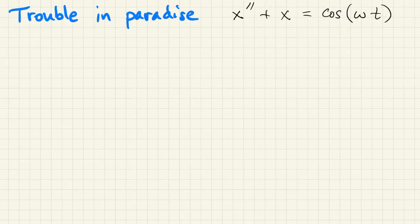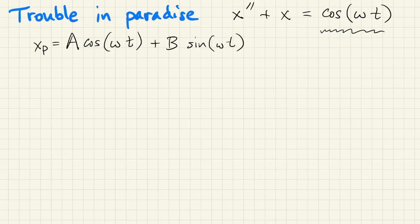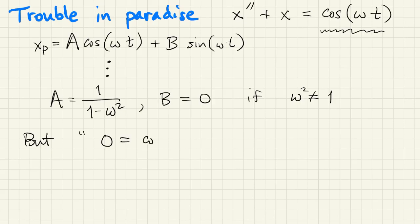Now things don't always work exactly with the way this method is being given to you. So here's another example with a cosine forcing. And again, that tells us that xp should have cosine and sine in it. And this is just like the last example. Turn the crank. And what you'll find is that a should be one over one minus omega squared and b is zero. But obviously that will only work if omega squared is not one. If omega is equal to one and you do the substitution of this xp into the equation, what it tells you is zero equals cosine of t.